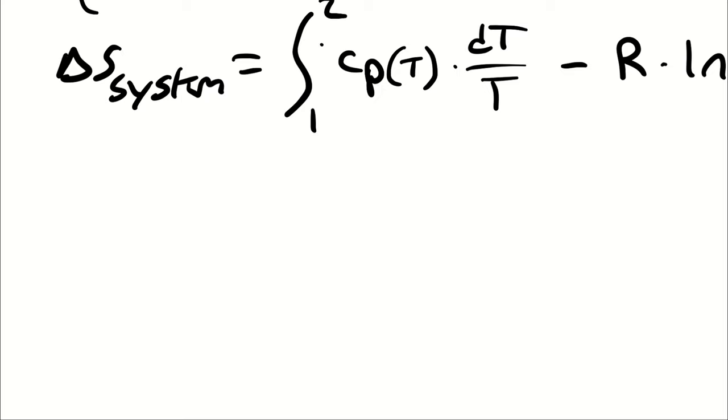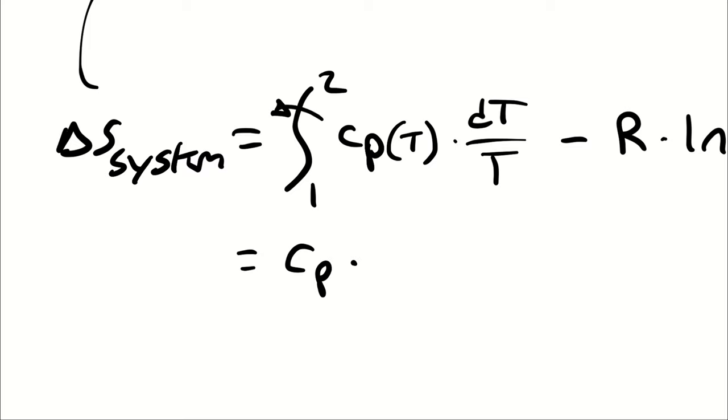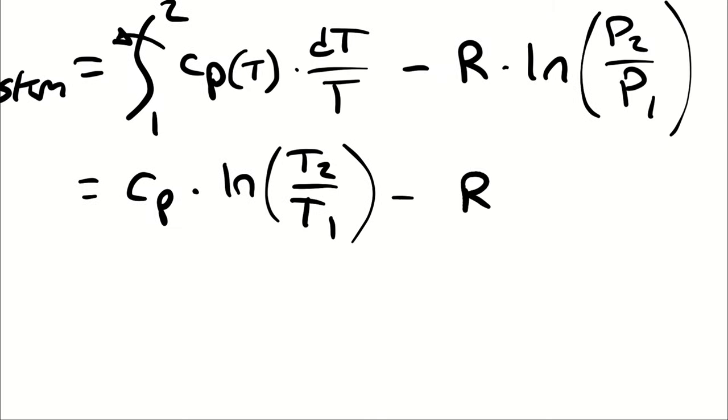So first simplification I make here is by recognizing that Cp is constant because I'm assuming it's constant because I was told to assume it's constant. Therefore Cp comes out of the integral and I'm left with Cp times the natural log of T2 over T1. It's the natural log of T2 over T1 because I'm left with the integral of 1 over T dt which is the natural log of T evaluated at 2 minus the evaluation at 1 which simplifies as a result of my logarithm rules to natural log of T2 over T1.